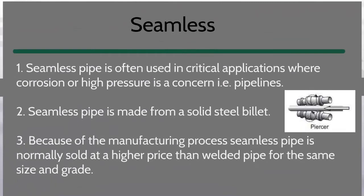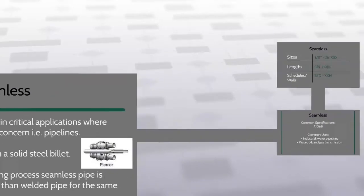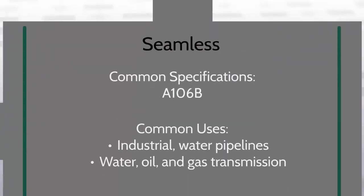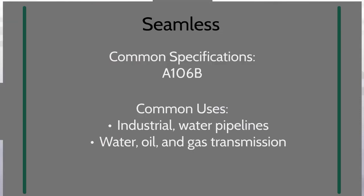Now that you've learned about welded pipe, let's move on to seamless. Seamless pipe is often used in critical applications where corrosion or high pressure is a concern, such as pipelines. Seamless pipe is made from a solid steel billet. Because of the manufacturing process, seamless pipe is normally sold at a higher price than welded pipe for the same size and grade. Common specifications for seamless pipe include A106B. Common uses for seamless pipe include industrial, water pipelines, and oil and gas transmission.